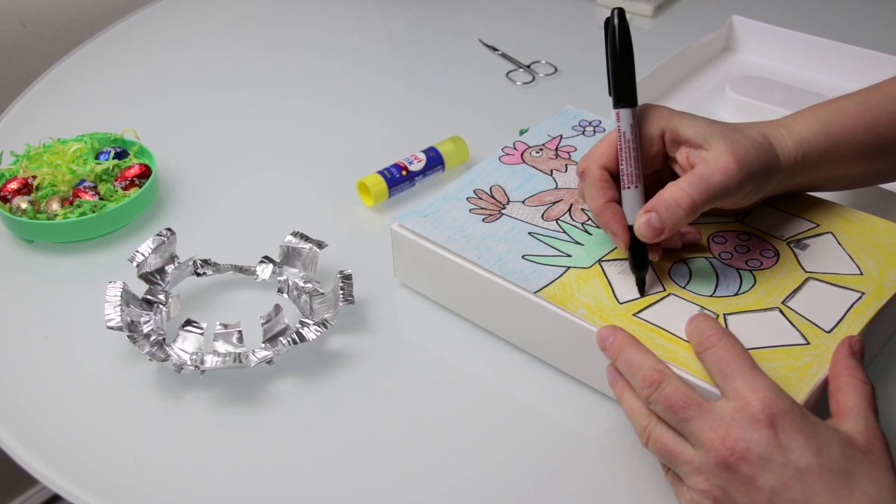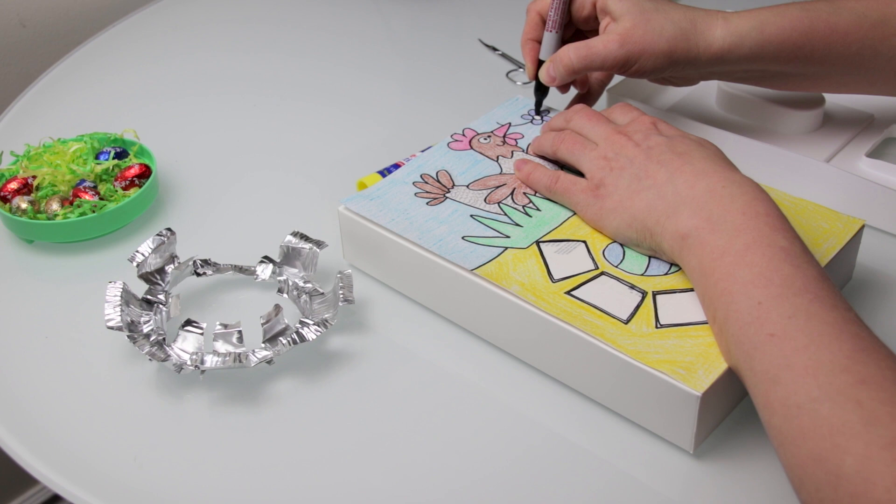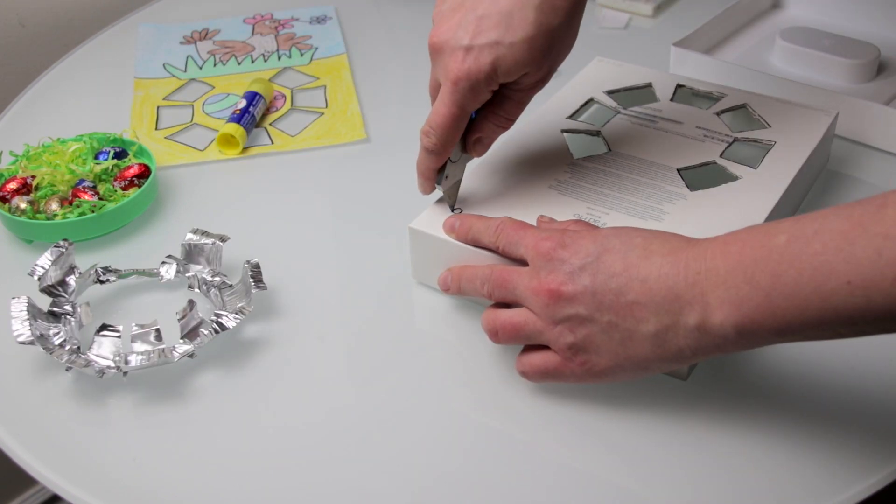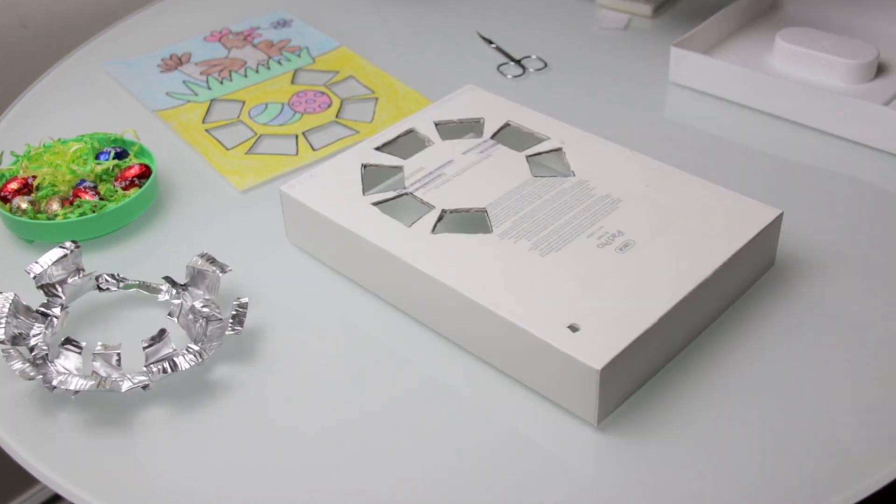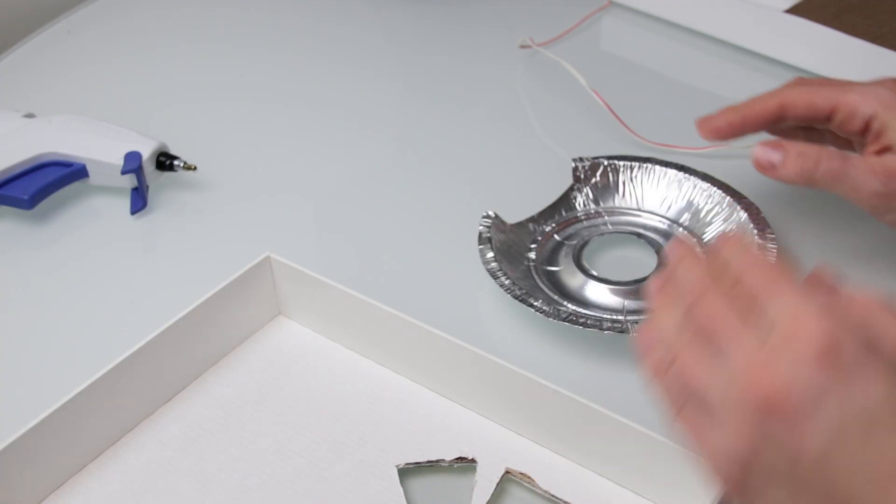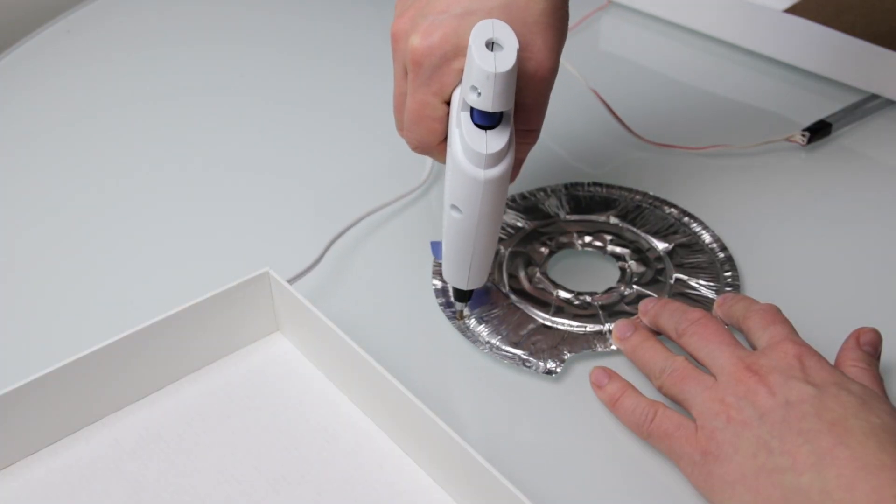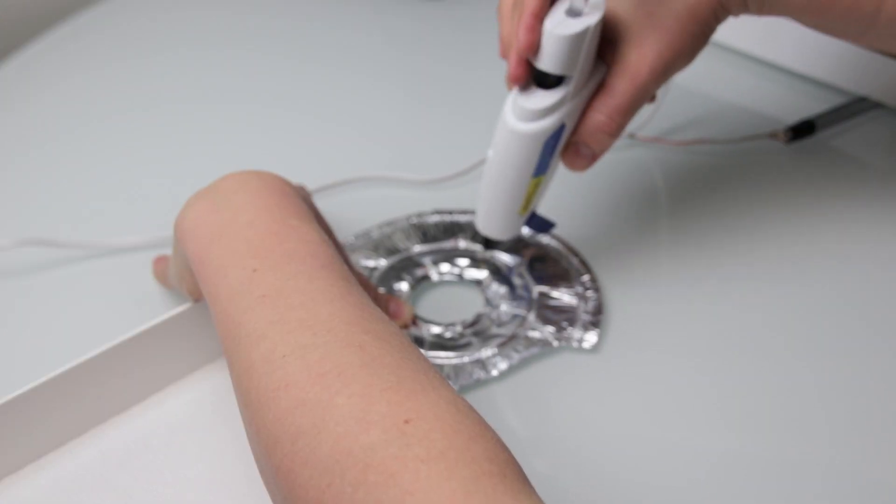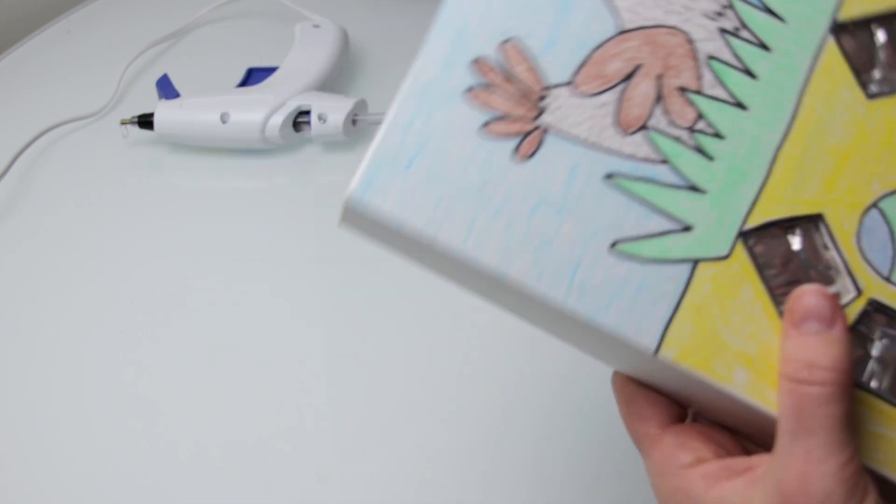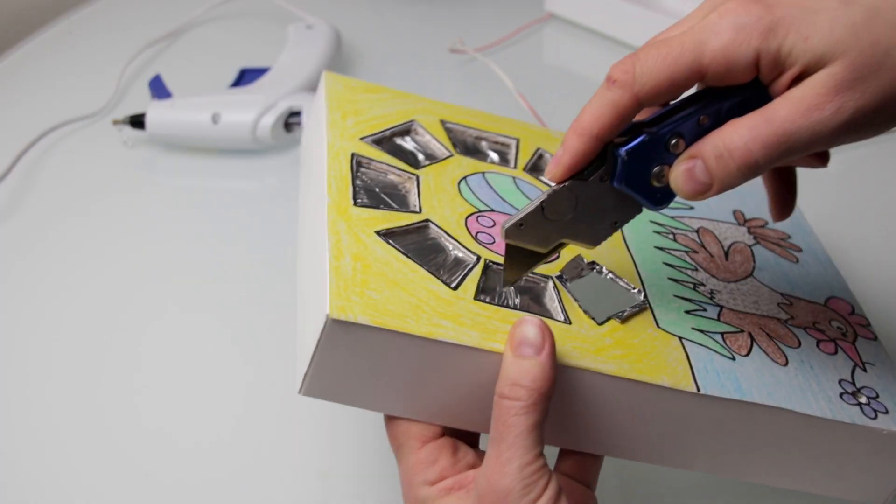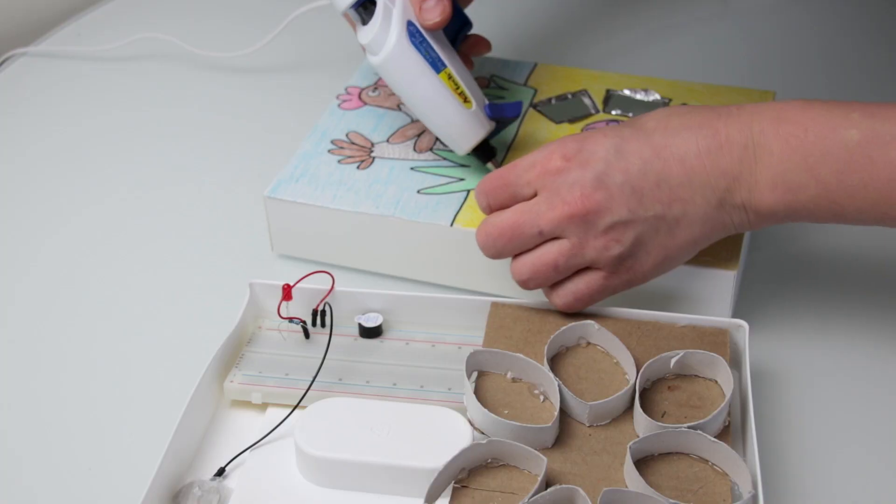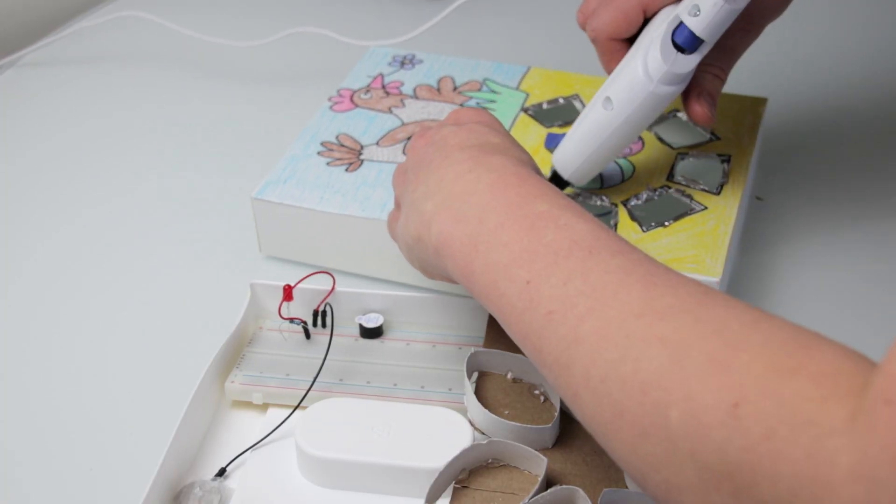Now let's get my artwork onto the box. I used hot glue to stick the foil to the box. Let's cut the foil and fold it around the edges of the holes. Using a bit of hot glue for the edges so they stay in place.